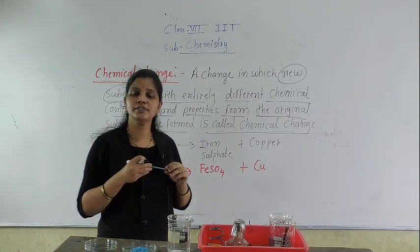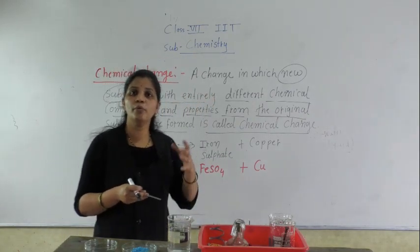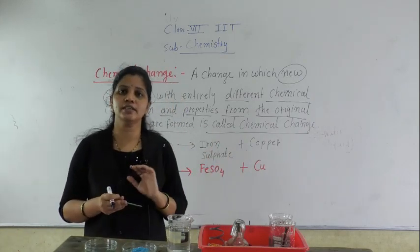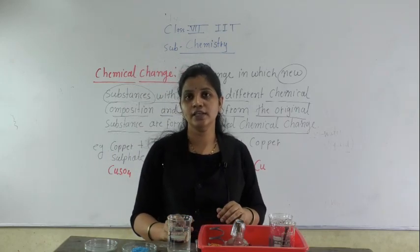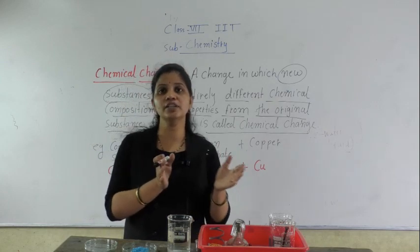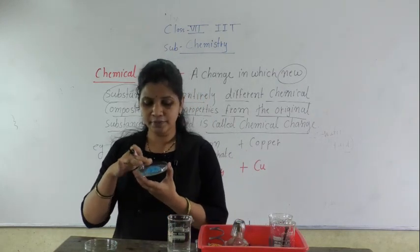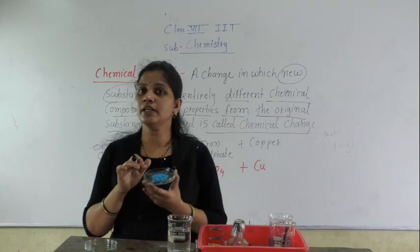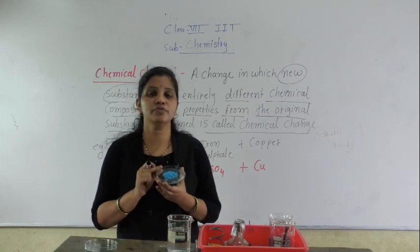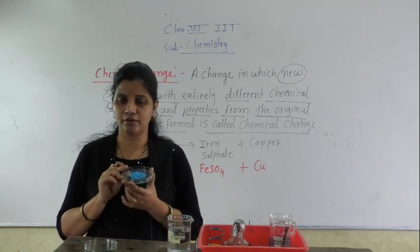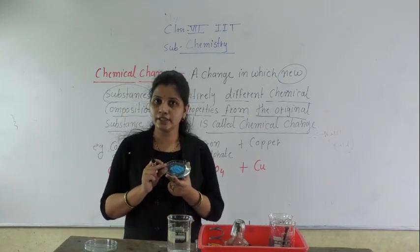So, chemical change means a totally new substance is formed, and the original substance's characteristics change. In your textbook, one activity is given showing how chemical change occurs. For that, which things do we need? In this petri dish, a blue color chemical product is given. This is known as CuSO4 — copper sulfate. What is the name of this? Copper sulfate. Just open your textbook — the first activity in the chemical change section.